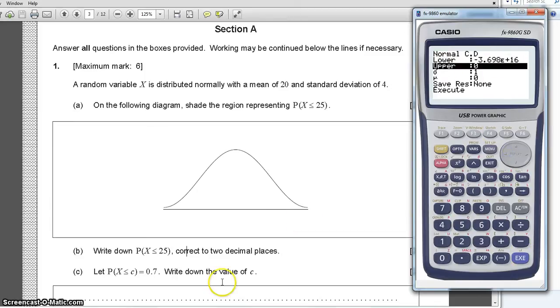Then, our upper bound, as we want it to be smaller than or equal to 25, our upper bound is 25. Now, the sigma, which is the standard deviation, is 4. And the mean is 20. We just press the execute button two times. And we have the probability of being smaller than or equal to 25 is 0.89435. Remember to write it down with three significant figures like 0.894.